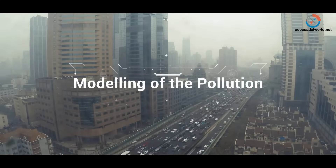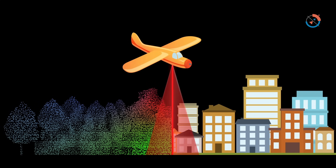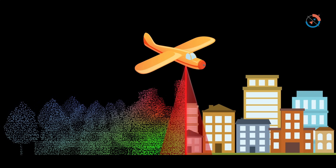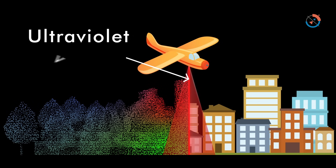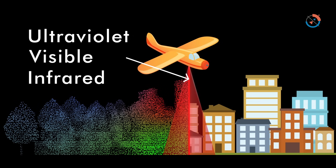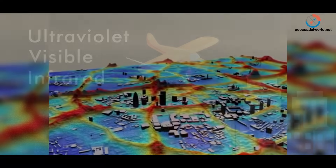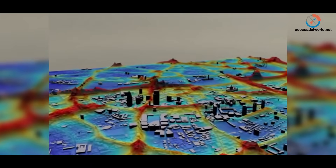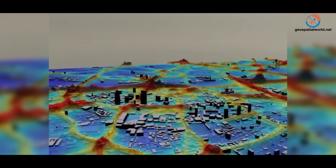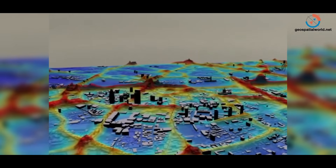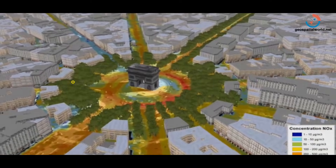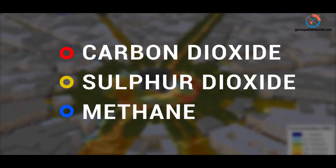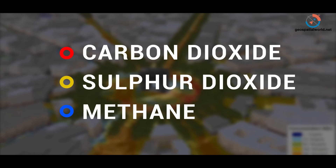Modelling of Pollution. LiDAR wavelengths are shorter, operating in the ultraviolet, visible region or near infrared. This helps to image particulate matter which is the same size or larger than the wavelength. So LiDAR can detect pollutant particles of carbon dioxide, sulphur dioxide and methane.